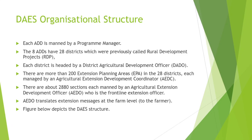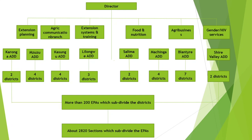In total, there are eight ADDs: Kalonga, Nzuzu, Kasungu, Lilongwe, Salima, Machinga, Blantyre, and Shire Valley. The eight ADDs have 28 districts in total. Kalonga has two, Nzuzu has four, Kasungu has four, Lilongwe three, Salima has two, Machinga four, Blantyre seven — this is the ADD with the most districts — and Shire Valley ADD has two districts, Chikwawa and Nsanje.